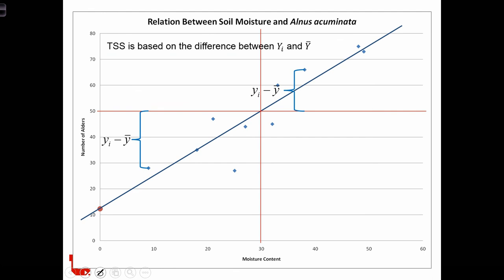So graphically, yi minus y̅ is the difference between the observed value of Y and the mean of Y. So the quantity yi minus y̅ has a length of this. It's the difference between yi and the mean, which in this case is 50. So each of our observed yis is contributing some amount to the total sum of squares.